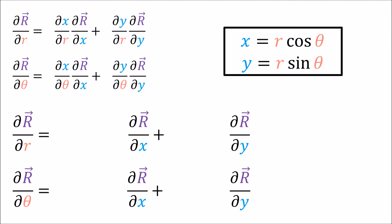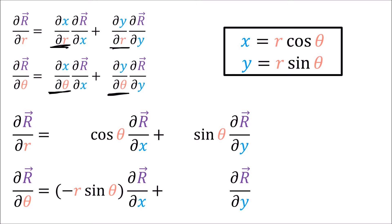Taking this equation here for changing between coordinate variables, we get that ∂x/∂R is cosine θ, and ∂y/∂R is sine θ. Likewise, ∂x/∂θ is −R sin θ, and ∂y/∂θ is R cos θ.